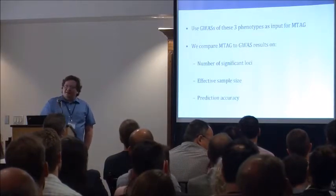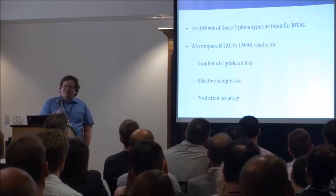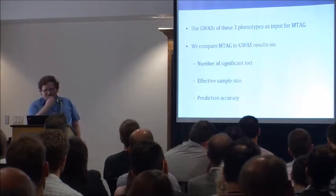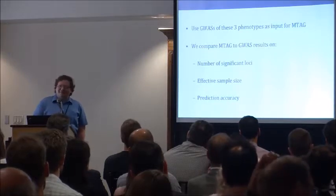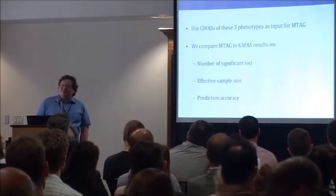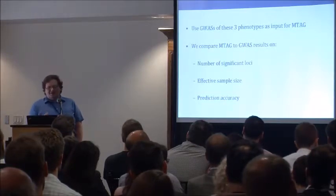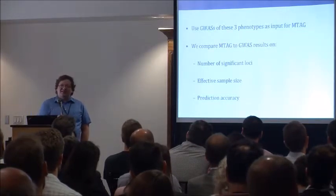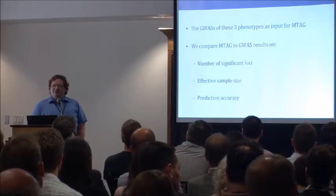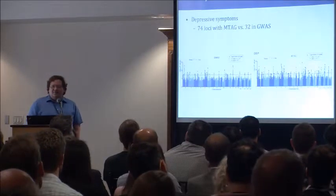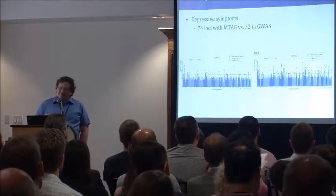We ran MTAG with these three sets of phenotypes and then compared those MTAG results to the single-trait GWASs to see how MTAG is pushing forward our results. We can start with the simple counting of number of significant loci — the traditional 'how good is your GWAS, how does the Manhattan plot look.' But it's probably more compelling to think in terms of effective sample size: how big a GWAS would we have to have of the individual trait to get power comparable to what we're seeing out of MTAG? And most relevant to this audience, how much are we able to improve prediction accuracy?